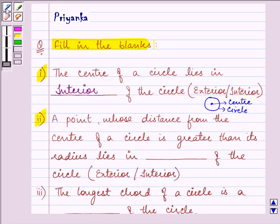The second point says a point whose distance from the center of the circle is greater than its radius lies in blank of the circle.